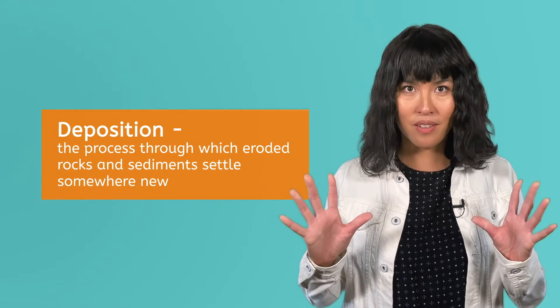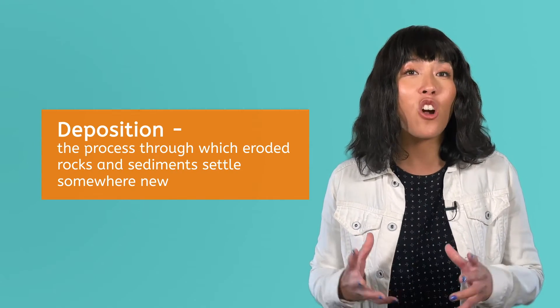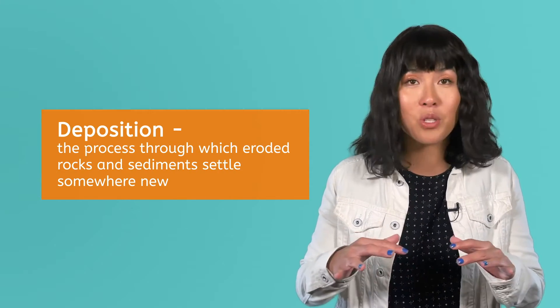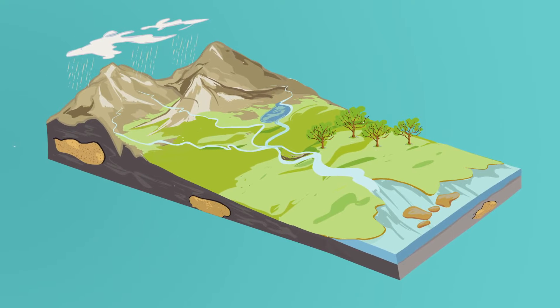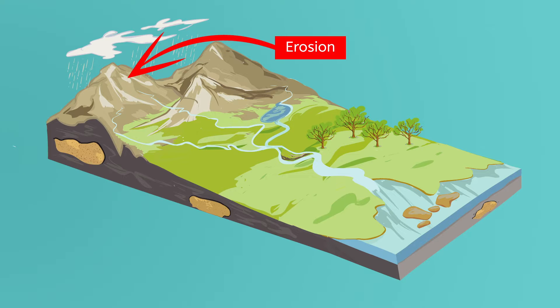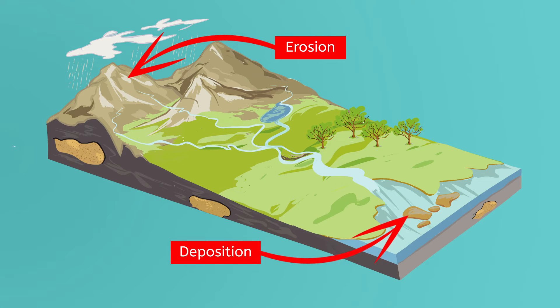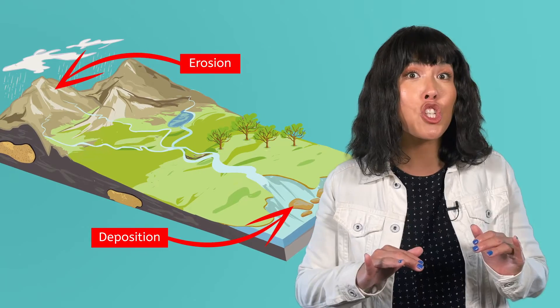Erosion is followed by another process called deposition, which is when eroded rocks and sediments are deposited and settle somewhere new. So while erosion shapes the Earth's surface by carving away pieces of the land, deposition shapes it by dropping off rocks that create new landforms. Beaches are created by the deposition of sand, rocks, and shells that were eroded by the ocean. Sand dunes are rolling hills of sand deposited by wind.